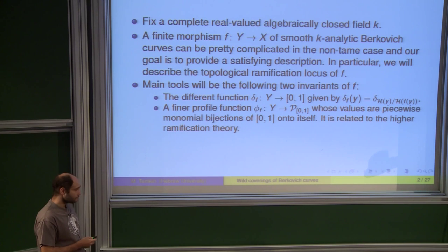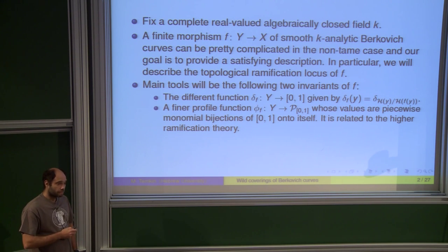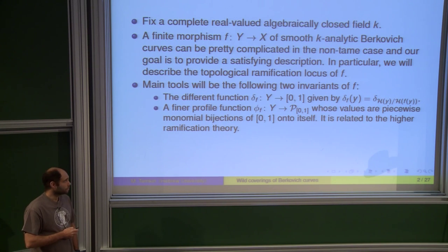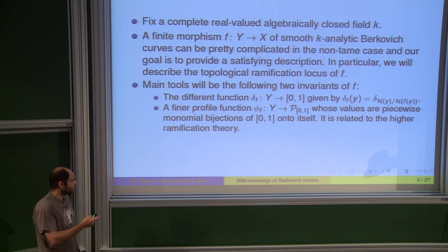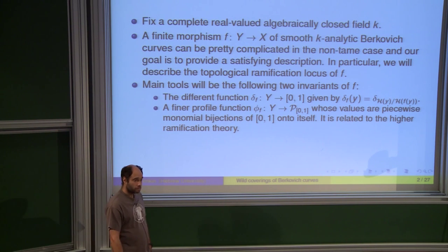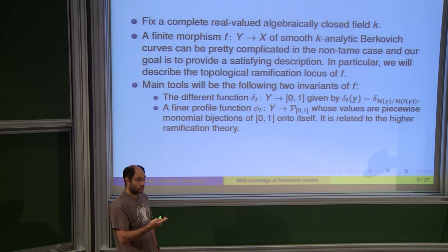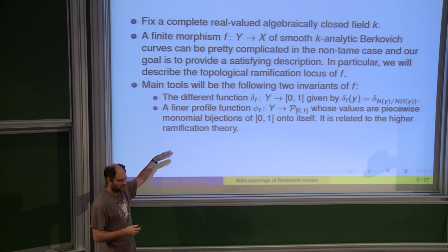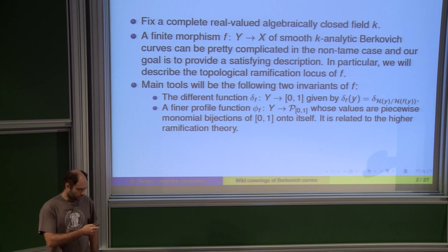Regarding the monomial bijections mentioned: they are monomials in coordinates of zero, one. You have some function from one to zero, one, which is monomials of natural powers with some coefficients. The coefficients will be from the absolute value of k.